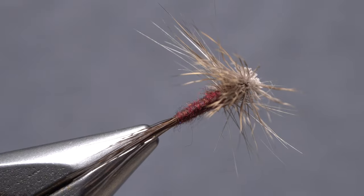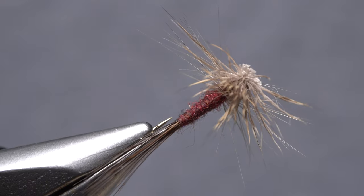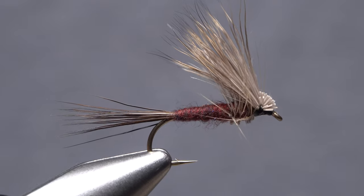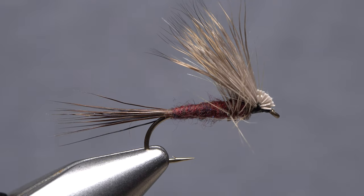And that's a Harrop's hair wing style Isonychia. Although this fly can be fished at any time of the day, I find it especially effective right at or even after dark.